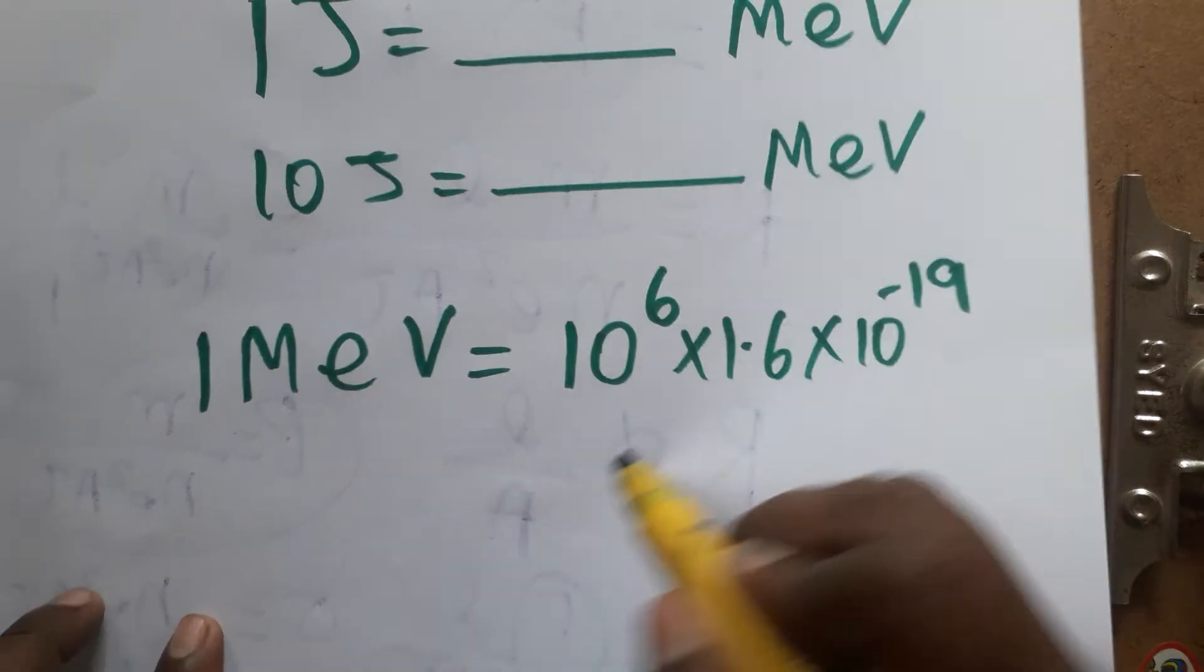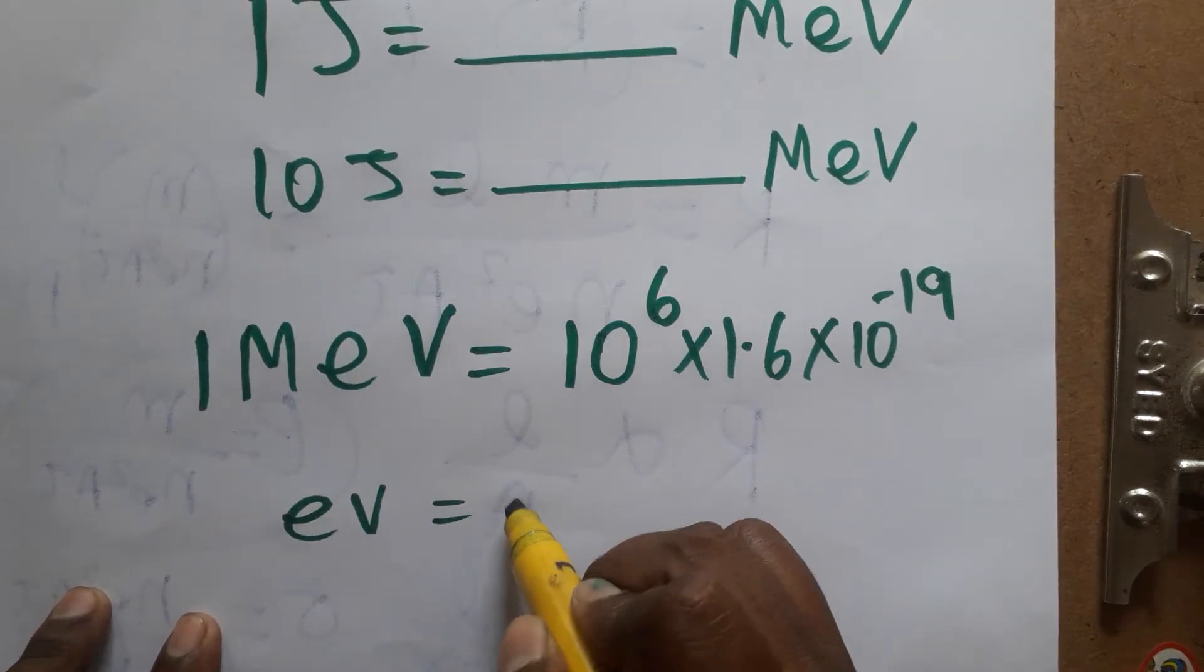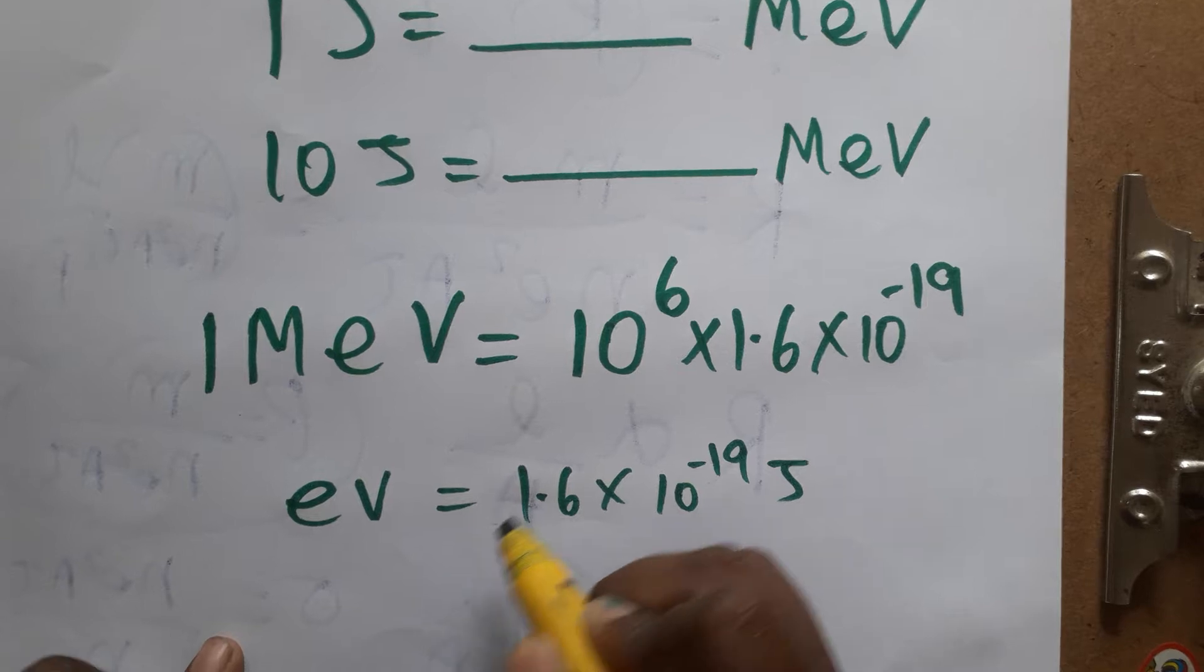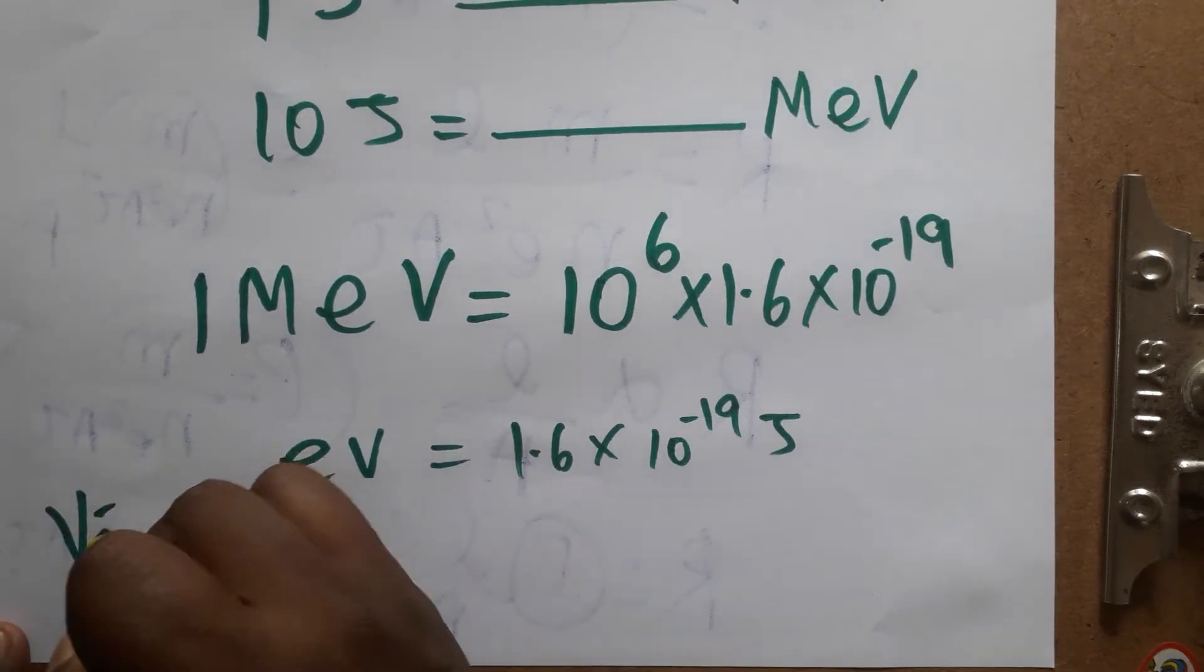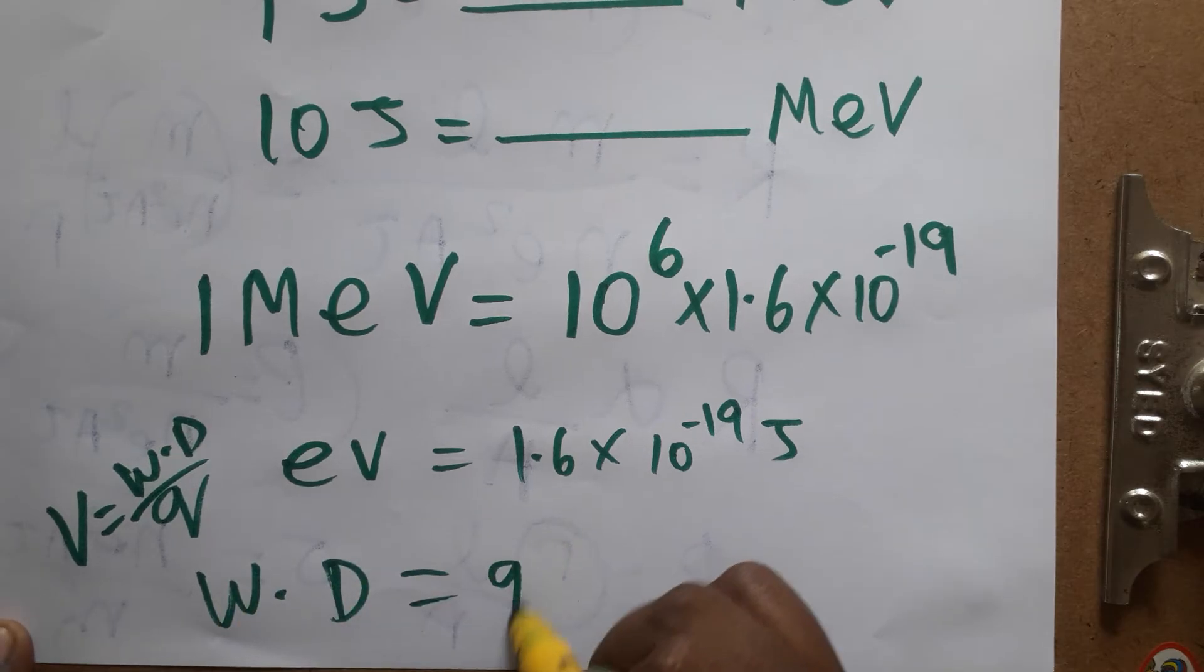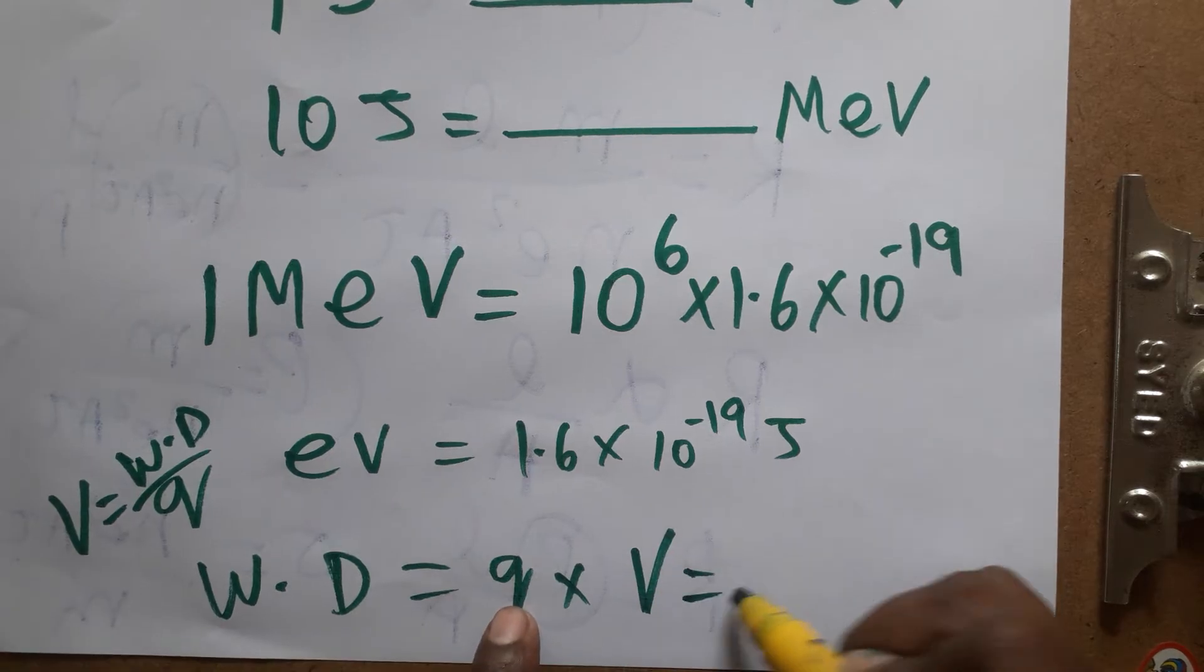Okay, mega 10 power 6 is the prefix word. eV is electron volt, we can take it as it's 1.6 into 10 power minus 19 joule. How come eV value will become as a joule? Because voltage is equal to work done by charge.